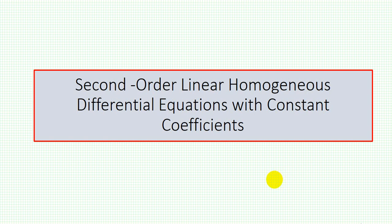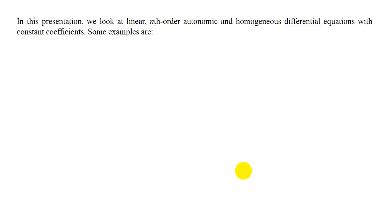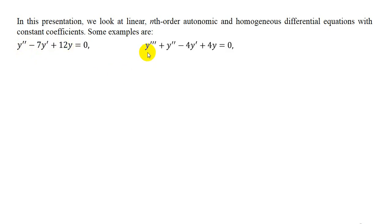Now let's talk about second-order and higher homogeneous differential equations with constant coefficients. In this presentation, we'll look at linear nth-order autonomous and homogeneous differential equations with constant coefficients. Some examples: first, y'' - 7y' + 12y = 0; second, y''' + y'' - 4y' + 4y = 0; third, y'' + y = 0. All of these are homogeneous differential equations with constant coefficients.